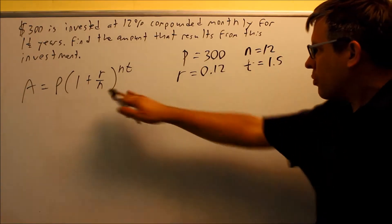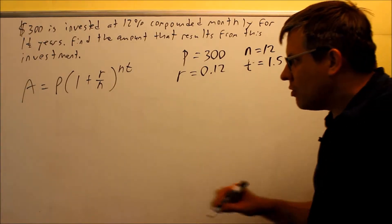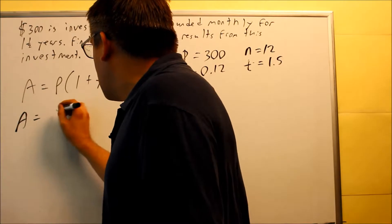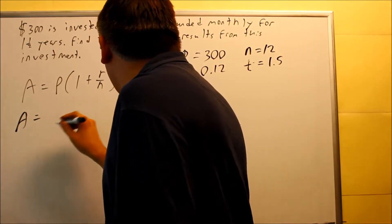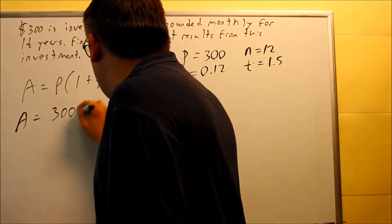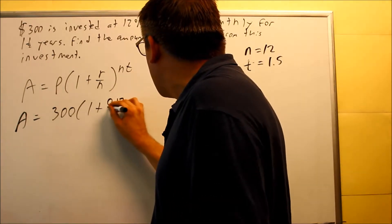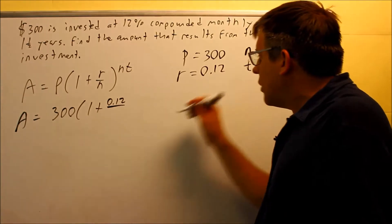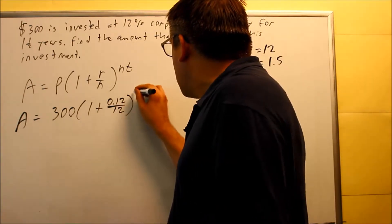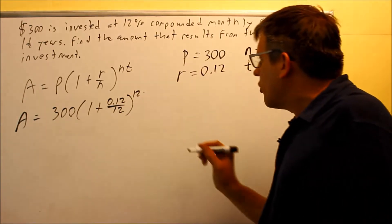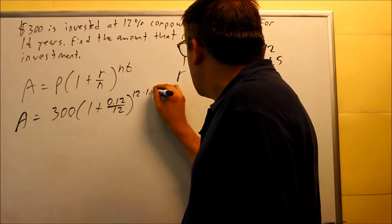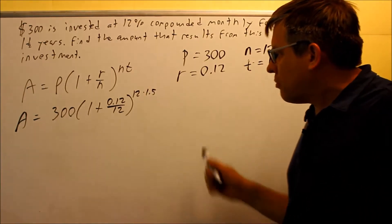We're going to take all these numbers and put it into the formula, and we'll just compute this. So my amount is going to equal my principal, 300, times 1 plus your rate—make sure you're using the decimal version, 0.12, over N. My N is 12, and I have a 12 up here too, so 12 is multiplied times 1.5. So I'm putting everything all in there.